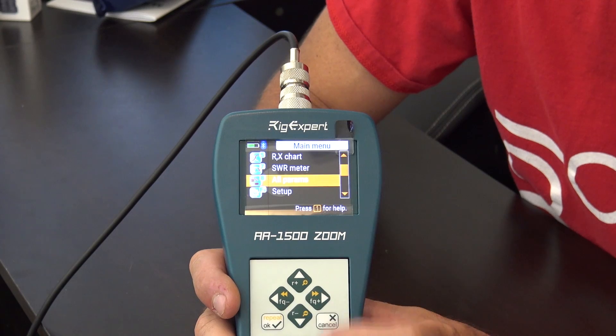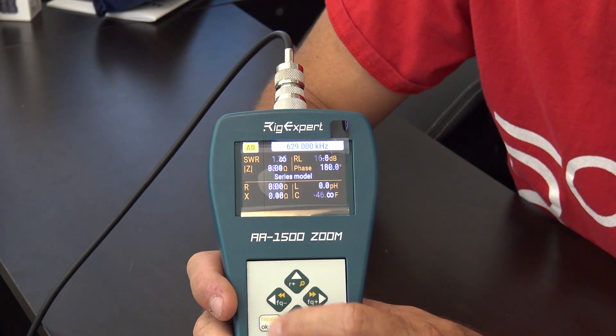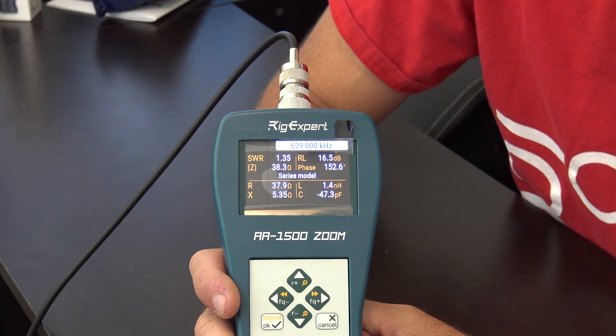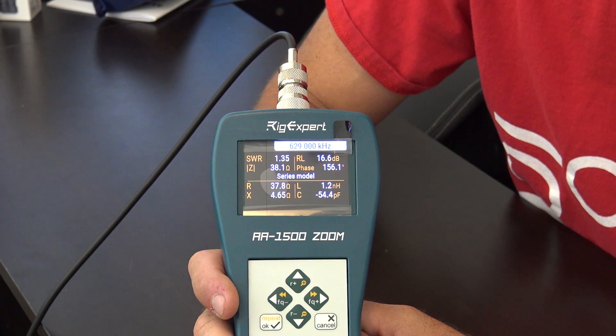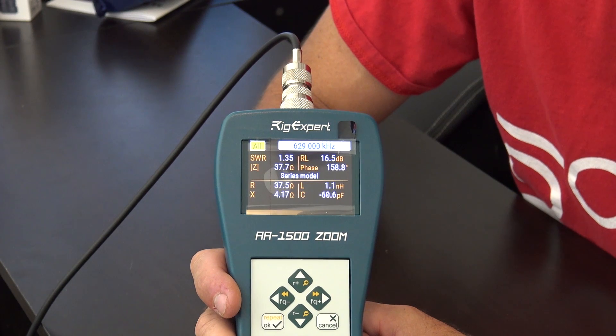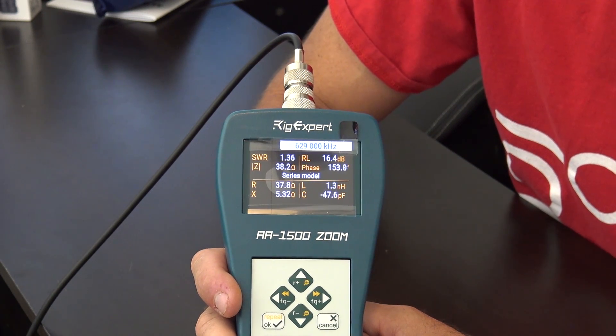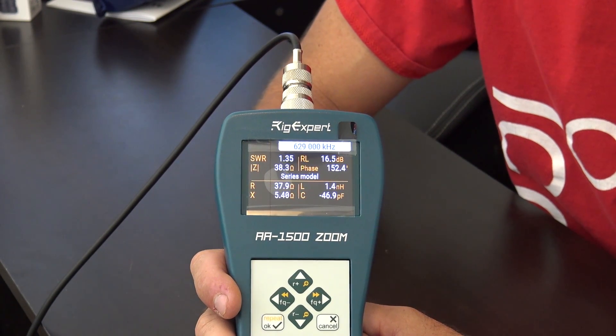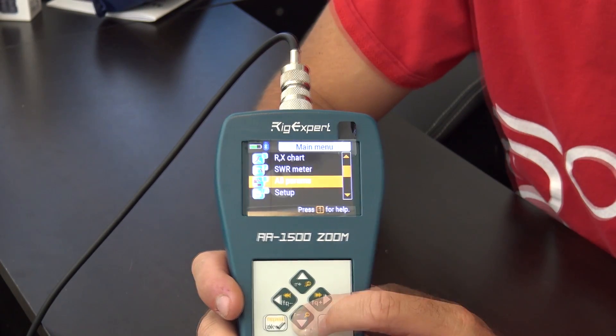So let's go here to all parameters. Now, this will show me everything at a snapshot on what's happening for reactance, resistance, impedance, return loss, capacitance, inductance, the phase, everything at one time. And this looks a little bit better than it does on one that's not a zoom model. You go to setup, this has Bluetooth on it.